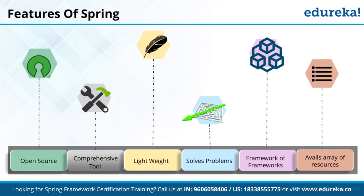The data access modules allow you to access data sets. If data is in an Oracle database, you can interact with it easily through Spring. We have a JDBC layer, ORM layer (Object-Relational Mapping, e.g., Hibernate), object-to-XML mappings, Java Messaging Services, and transaction management — supporting commit and rollback operations — all available within the data access module.